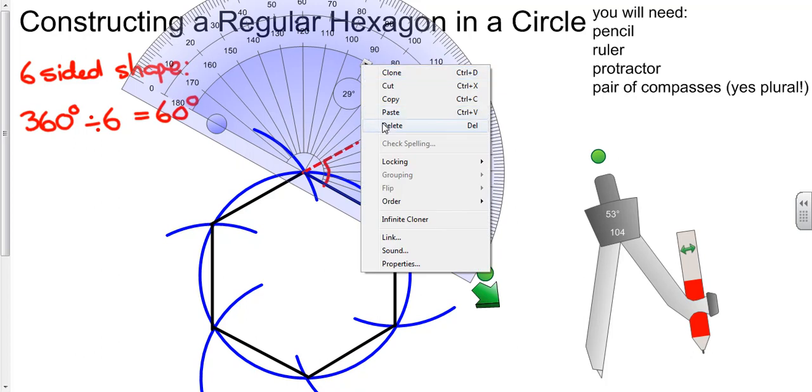Now I'm just going to get rid of my protractor and also identify that obviously if that angle there is 60 degrees, that's the exterior angle.